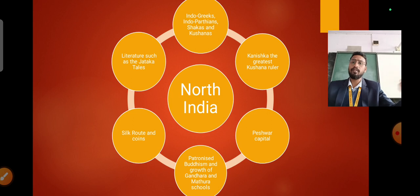Under the leadership of Kanishka, the great state of Magadha which had already shrunk, in the Northern India they started building up their own empire and under them many things happened. The Silk Routes, they patronized Buddhism, they had many gold coins, they promoted literature like the Jataka tales and Peshawar was the capital.